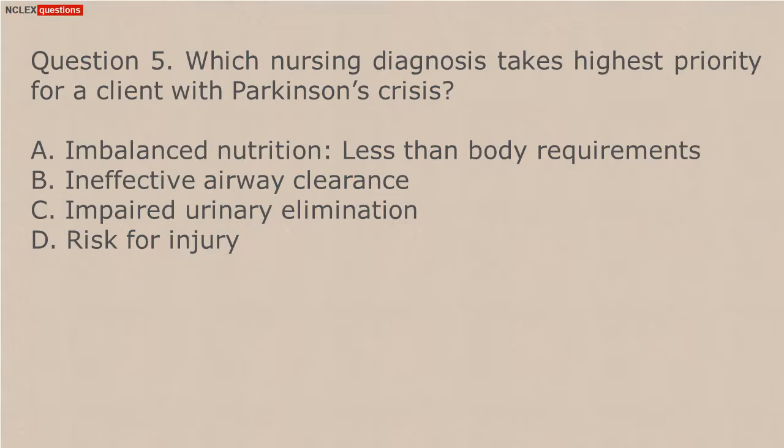Question 5. Which nursing diagnosis takes highest priority for a client with Parkinson's crisis? A. Imbalanced nutrition, less than body requirements. B. Ineffective airway clearance. C. Impaired urinary elimination. D. Risk for injury.